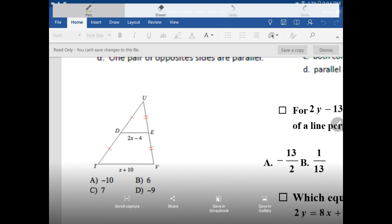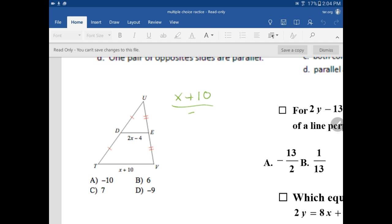We know that mid-segments are exactly half the size of our base. So our base of x plus 10, if we divide that by 2, it would be equal to the mid-segment, 2x minus 4.